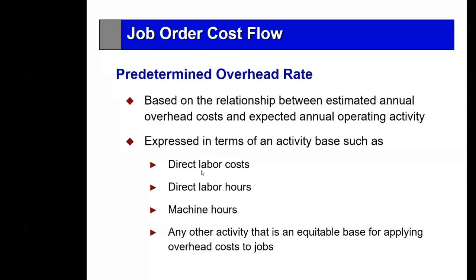We might have two types of labor — general labor at 10 dirhams per hour and engineering-type labor at 20 dirhams per hour. In that case, we still estimate annual overhead at 1 million, but use direct labor costs as the activity base. If total labor cost comes to 200,000 for the year, then the overhead rate is 500% of labor costs.